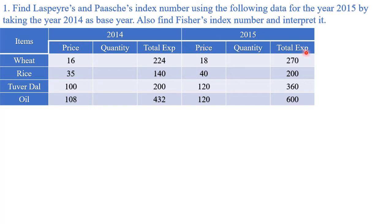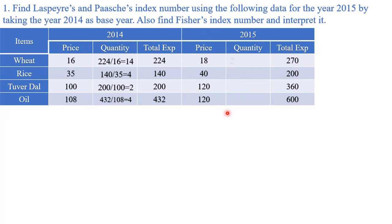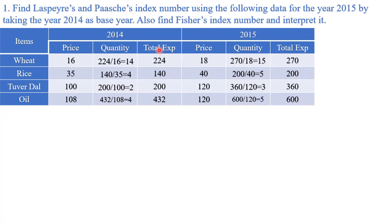To calculate the quantity we divide total expenditure by price: 224 divided by 16 is 14; 140 divided by 35 is 4; 200 divided by 100 is 2; 432 divided by 108 is 4. Similarly, divide the current year total expenditure values by prices to get all quantities. These calculations should be shown while writing down answers because they demonstrate the method used.